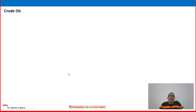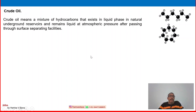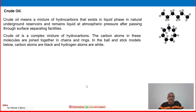Let us go back to the basic definition of crude oil. Crude oil is a mixture of hydrocarbons that exists in a liquid phase in natural underground reservoirs and remains liquid at atmospheric pressure after passing through surface separating facilities. This is the carbon-hydrogen bond structure — crude oil is a complex mixture of hydrocarbons where carbon atoms in these molecules are joined together in chains and rings.